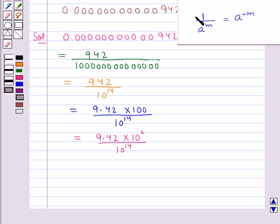Now we know that 1 upon a to the power m is equal to a to the power minus m. So this is written as 9.42 multiplied by 10 to the power 2, and 10 to the power 14 in the denominator is moved to the numerator, so it is written as 10 to the power minus 14.